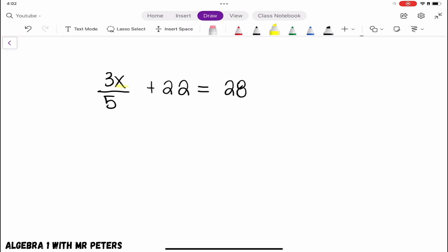Alright. So step one, we located our variable. And now our next step is to say, hey, what can we do to get 3 over 5x absolutely by itself on one side of the equal sign? And when I look, I think I should move 22 over to the other side. I should combine it with 28.